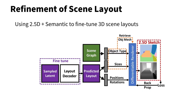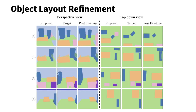Since our layout regression process is fully differentiable, we can further fine-tune a given layout using 2.5D and semantic exemplars. Given a generated layout, we can sample object meshes from SunCG and render the image using a differentiable renderer. This allows us to compute gradients with respect to the decoder and latent. Here are a few examples showing proposed layouts, target layouts, and the post-refinement layouts.